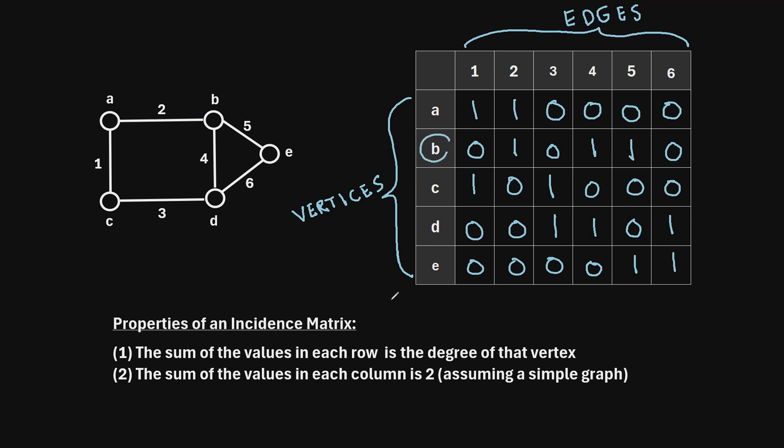And similarly, if we look at vertex B, if we take the sum of the values in that row, that sum turns out to be 3, which is the degree of vertex B. So if we look at vertex B, we can see that there are three edges in the graph that are incident to it, so it has a degree of 3.